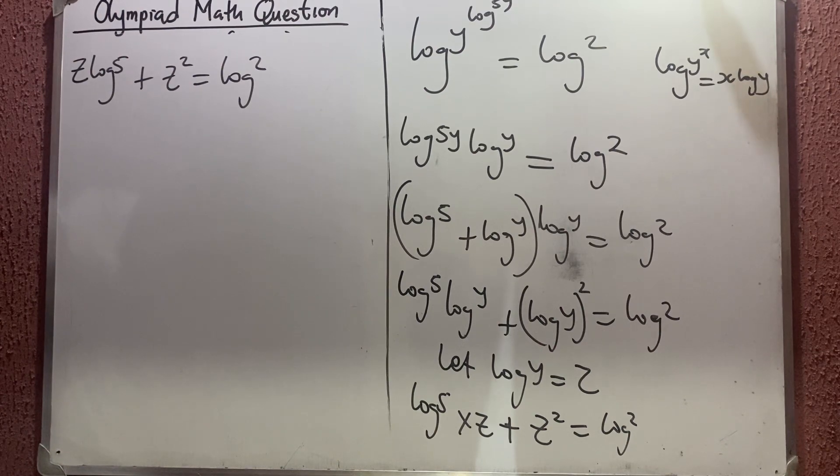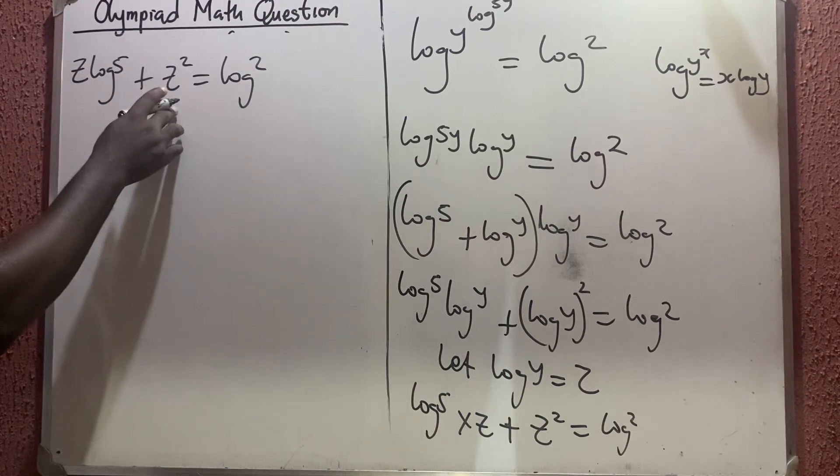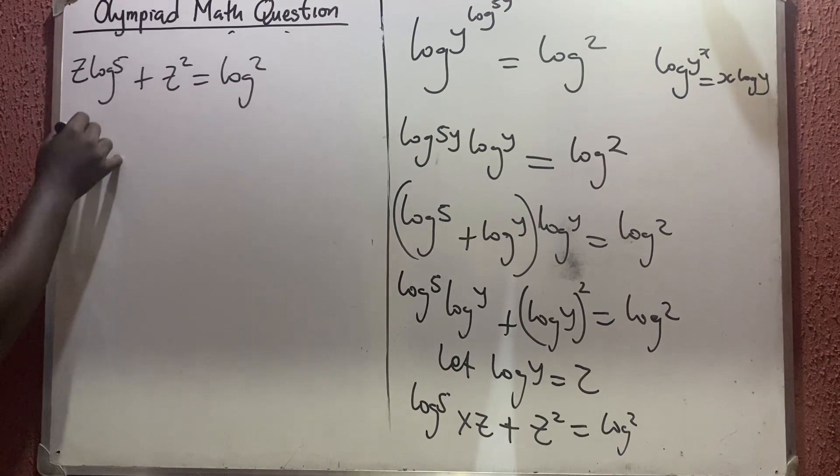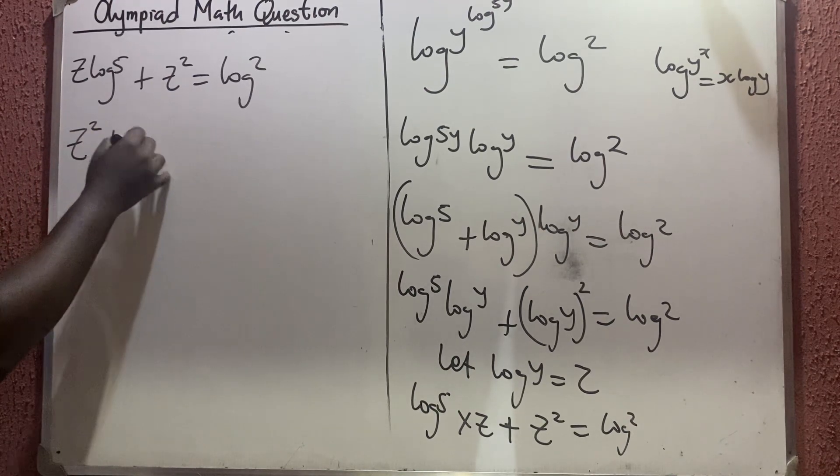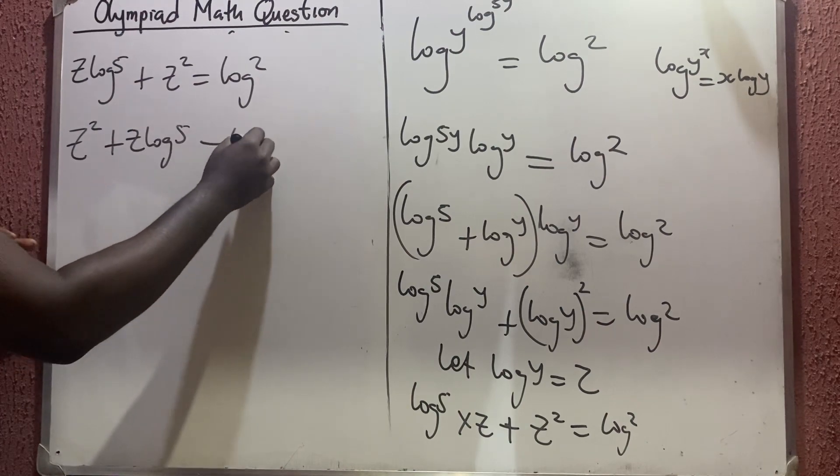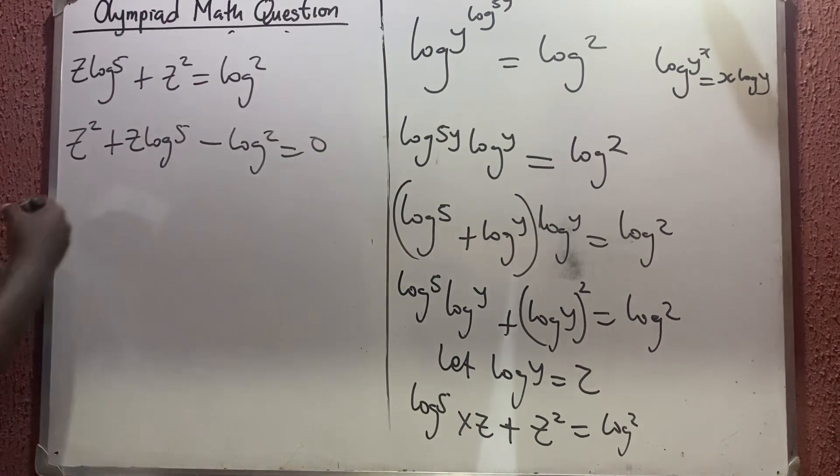So we are going to solve this using a quadratic equation. This is a quadratic equation in which we have z squared plus z log 5 minus log 2 equals 0.